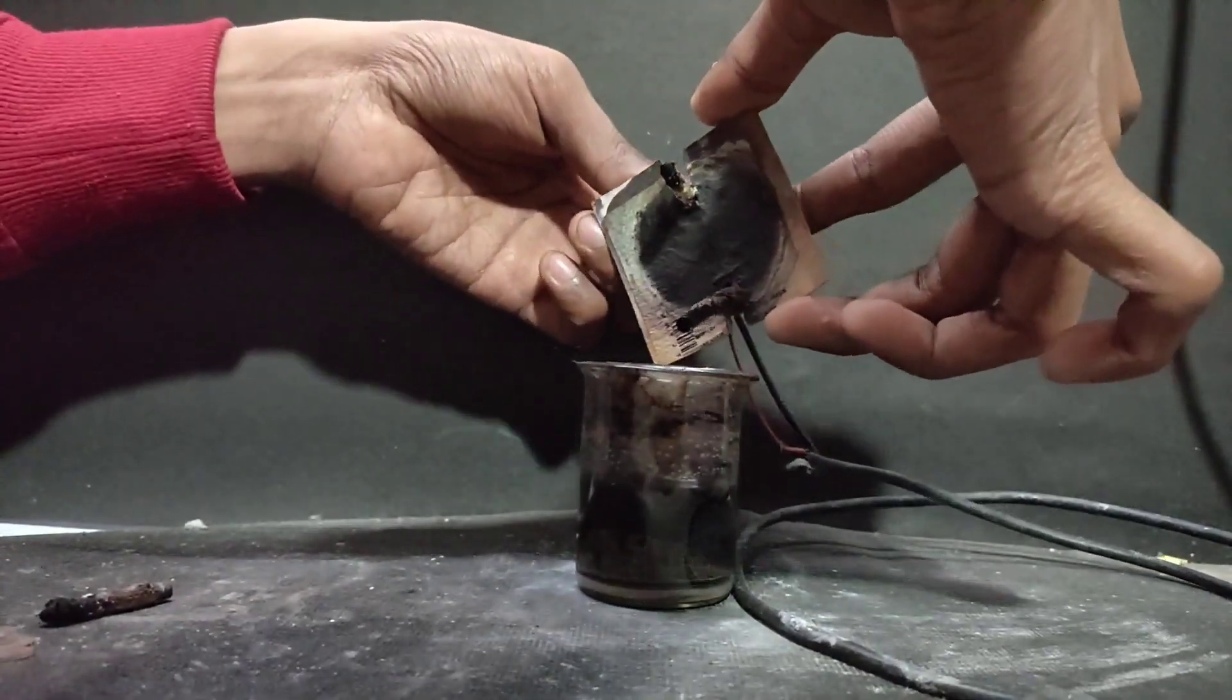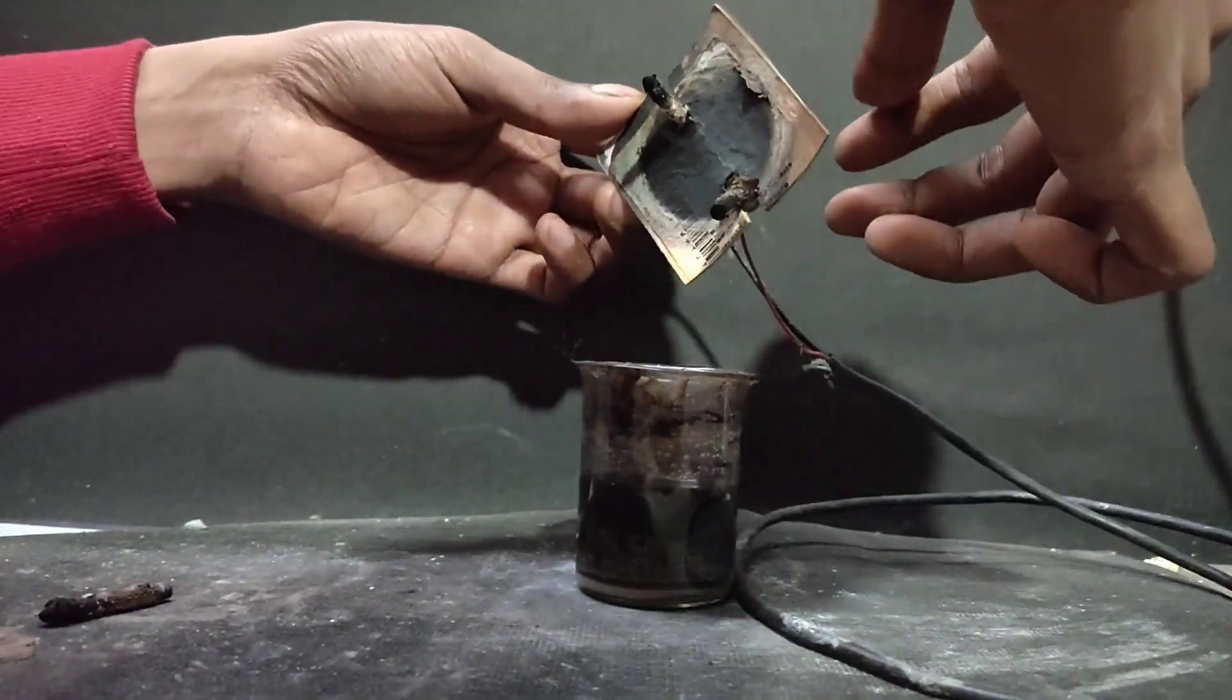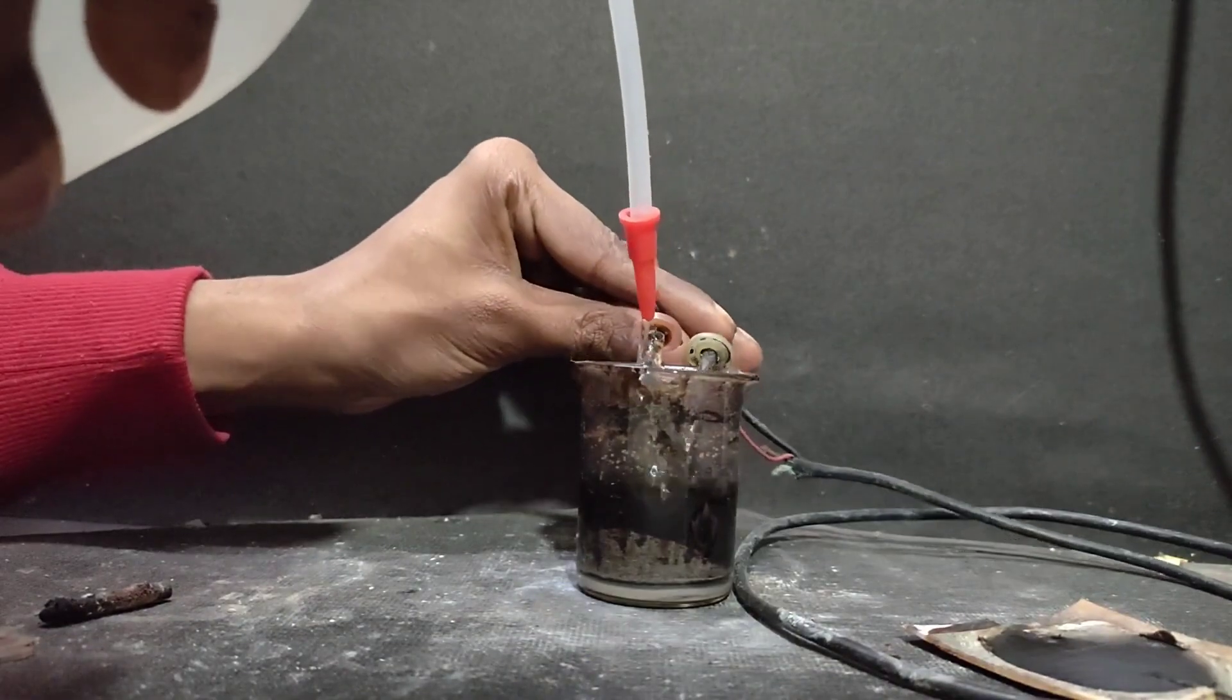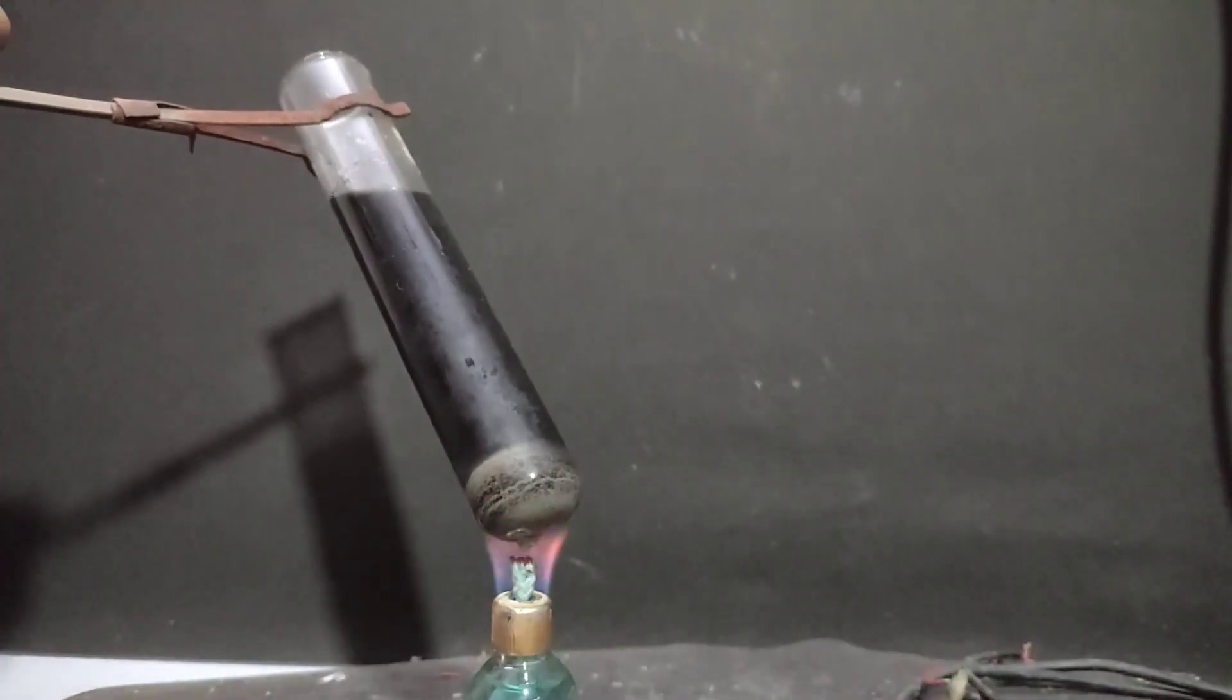So I replaced the anode and started electrolysis again. After a day, more solid was formed, but the anode had again disintegrated, so I washed them and took the whole solution in the boiling tube.